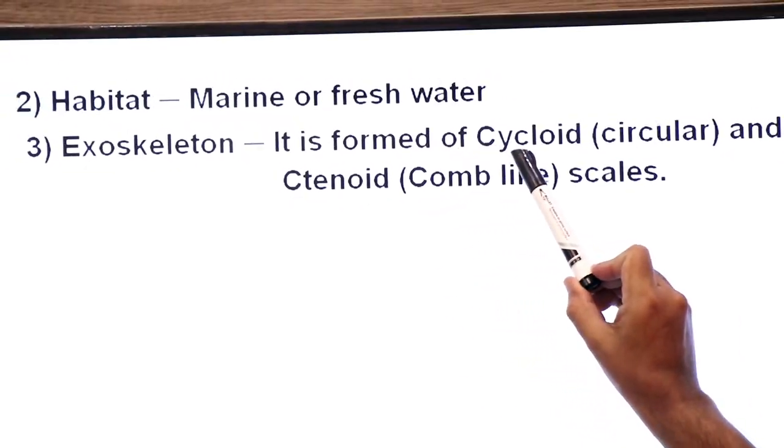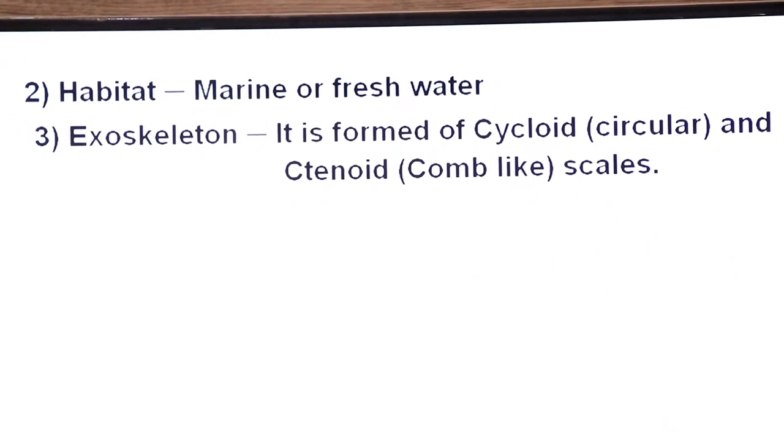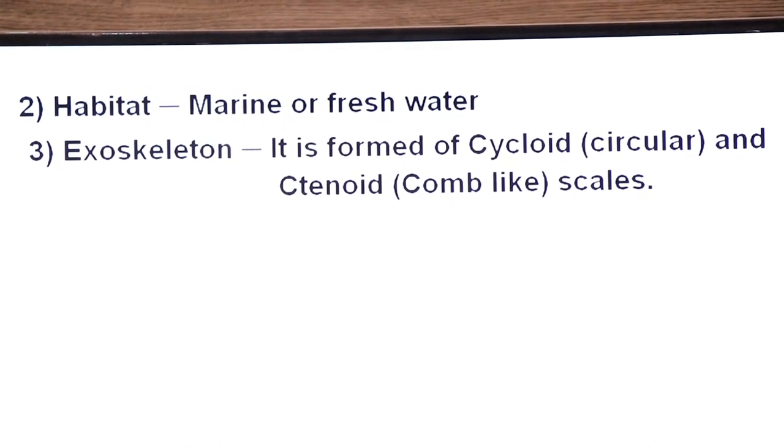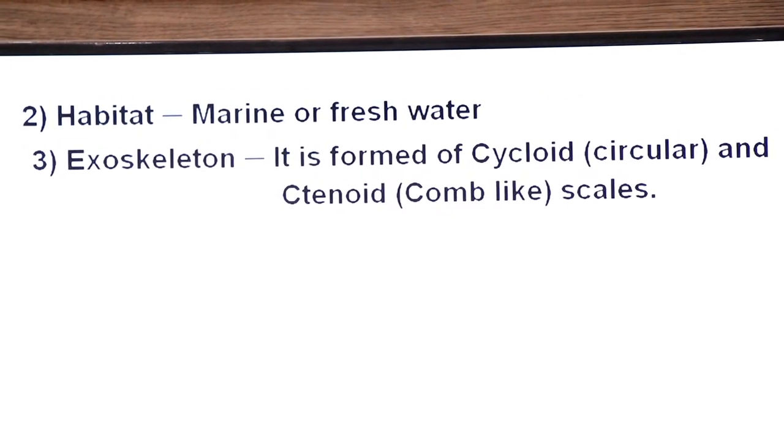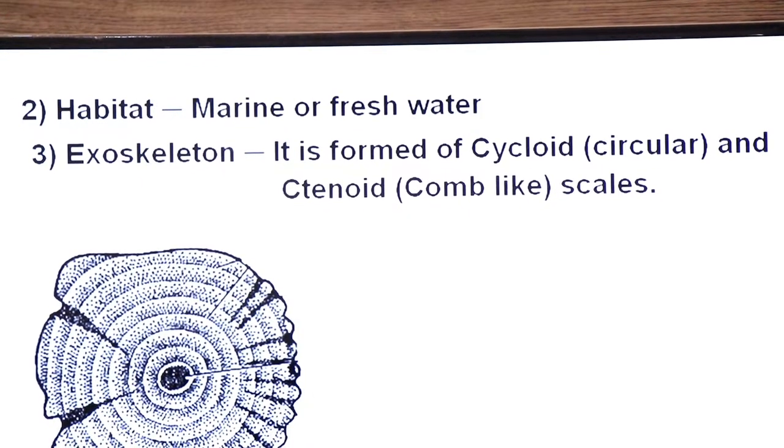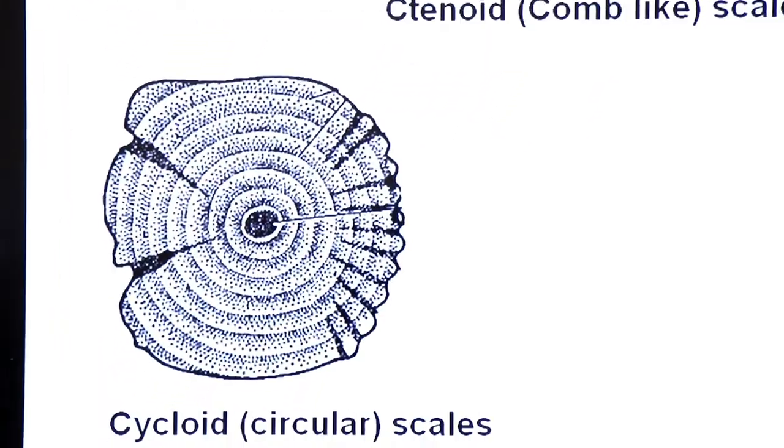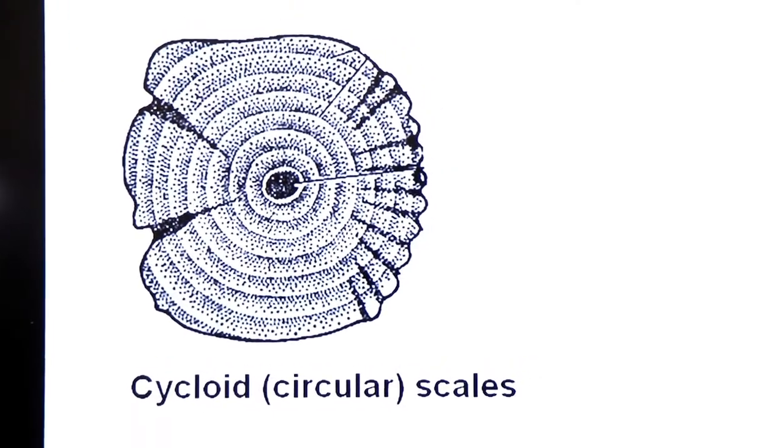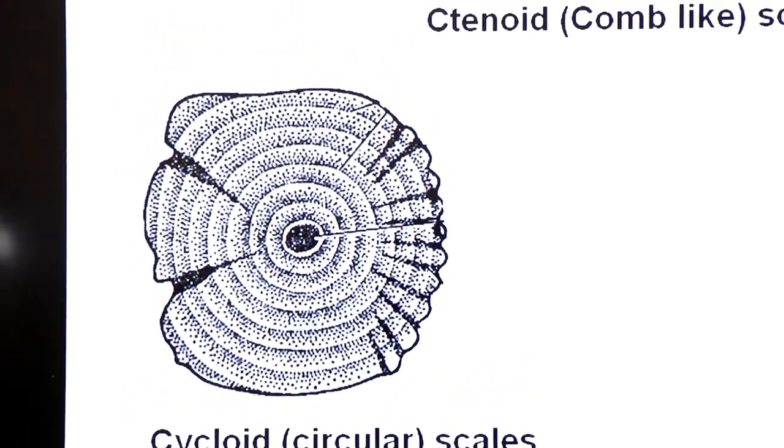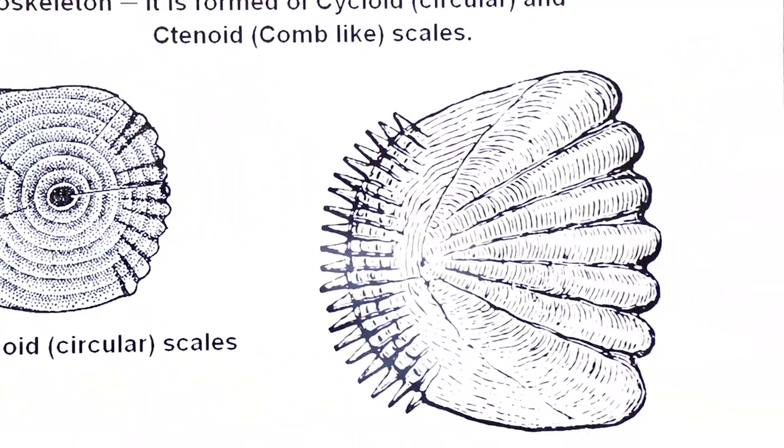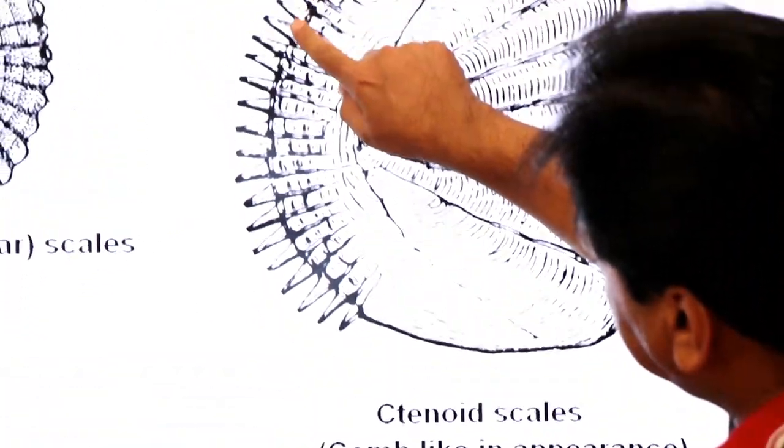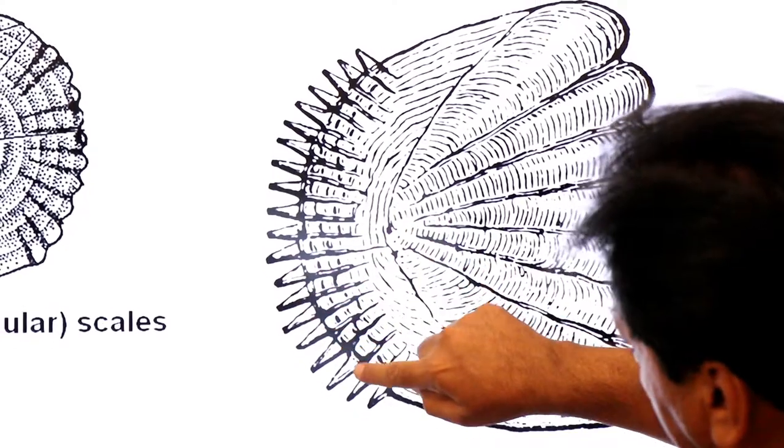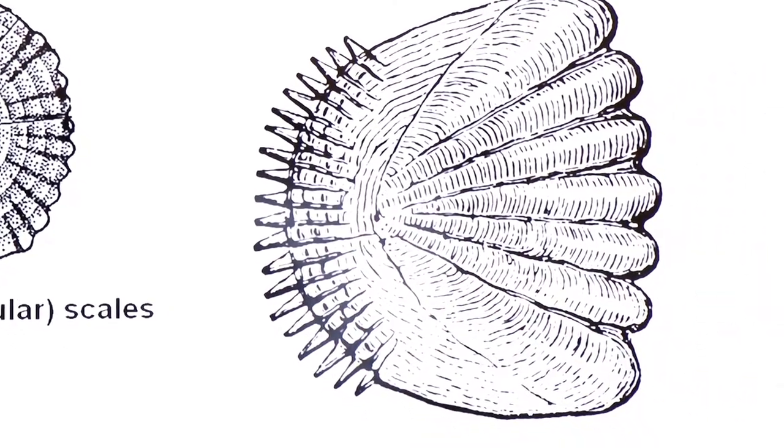It is found as cycloid scale which are circular in shape, and ctenoid which are comb-like in appearance. Now diagrams of both of these scales. Dear students, these are cycloid scales, circular in shape. And look at here, ctenoid scale, comb-like in appearance. Here you see it has spiny outgrowth, looks like comb in appearance.